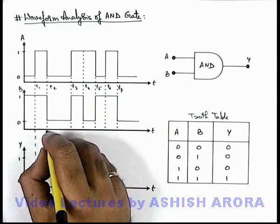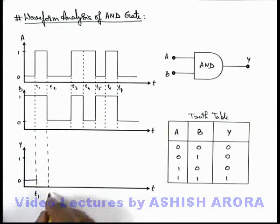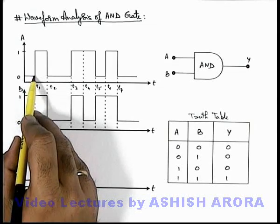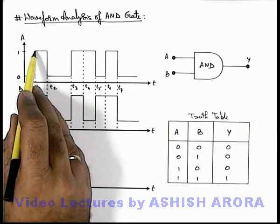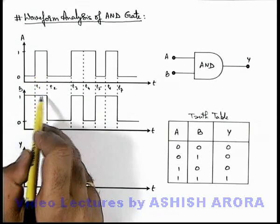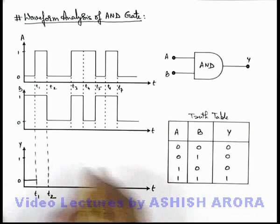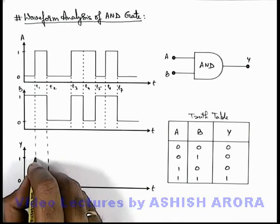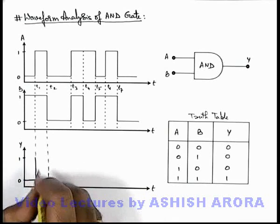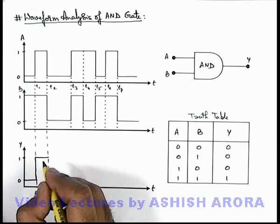In between the t1 to t2 instant, here we can see the signal A is in one state and B is also in one state. So if both are in one state, the output will be one, so here the output will toggle to one state.